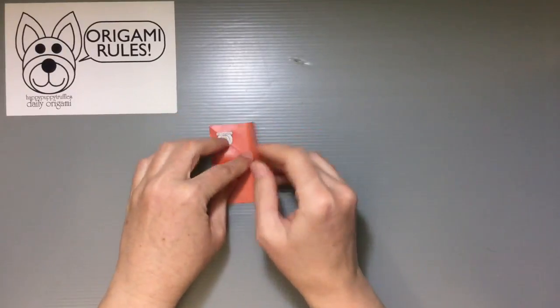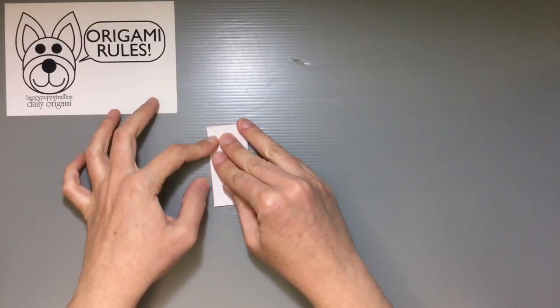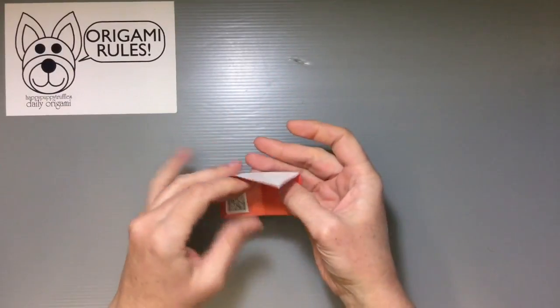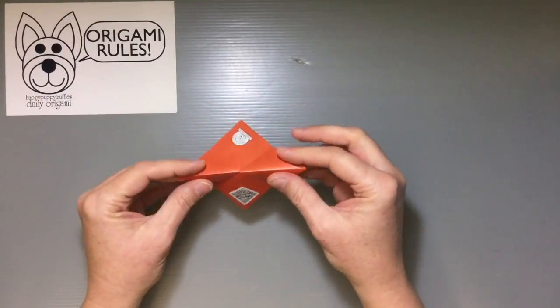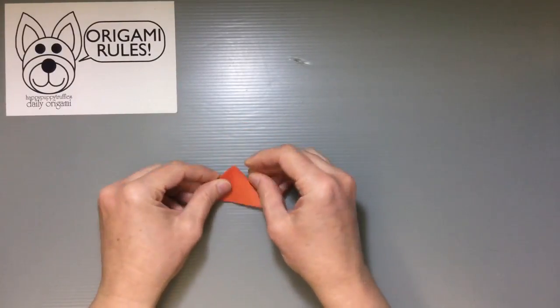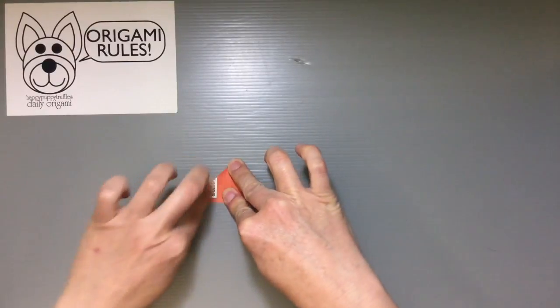And once we have all these preliminary creases, it makes it a little easier to collapse everything. So this is a great way to practice learning how to fold the water bomb base. Because when you look at it like this and you fold it in half, you just push in and shimmy everything around until you get a nice little triangle. And that is the completed base.